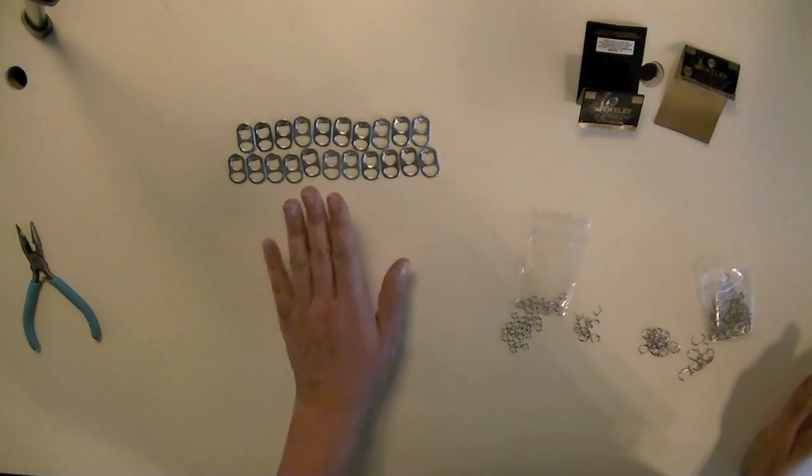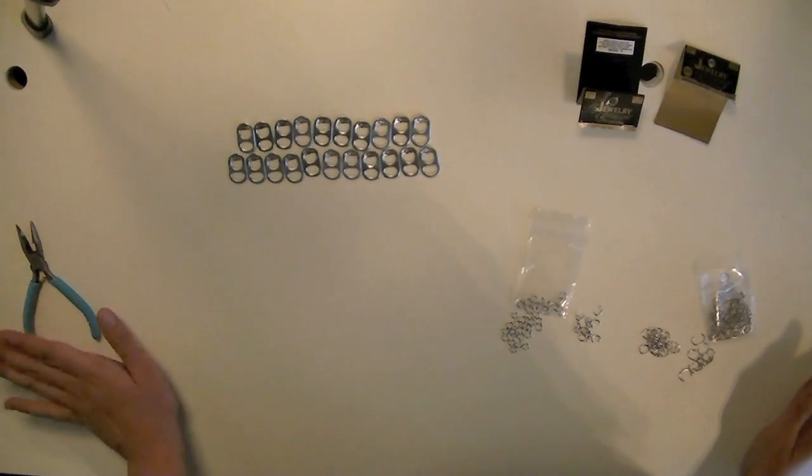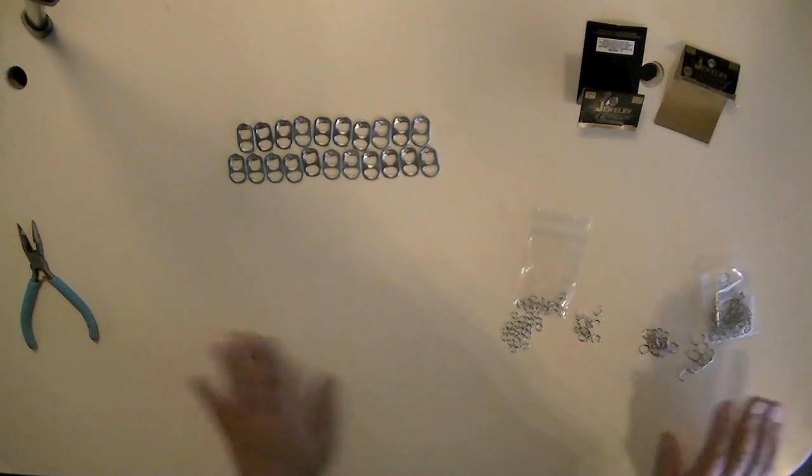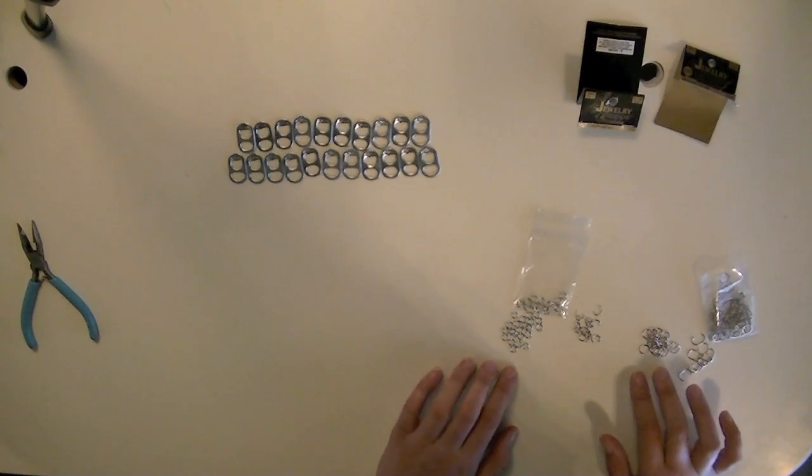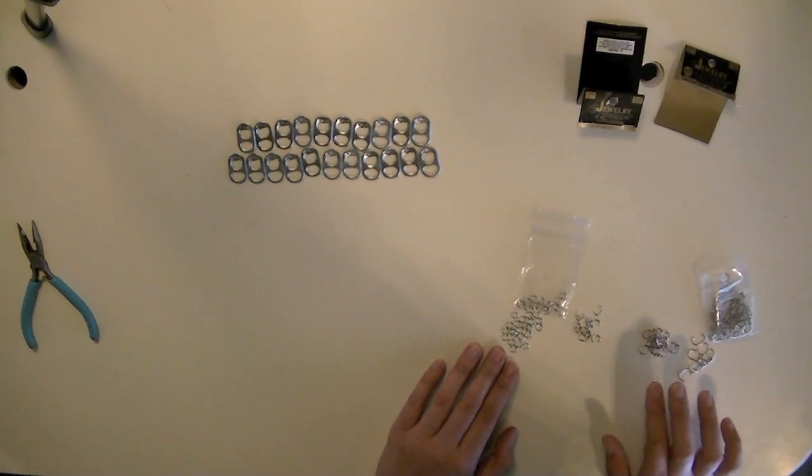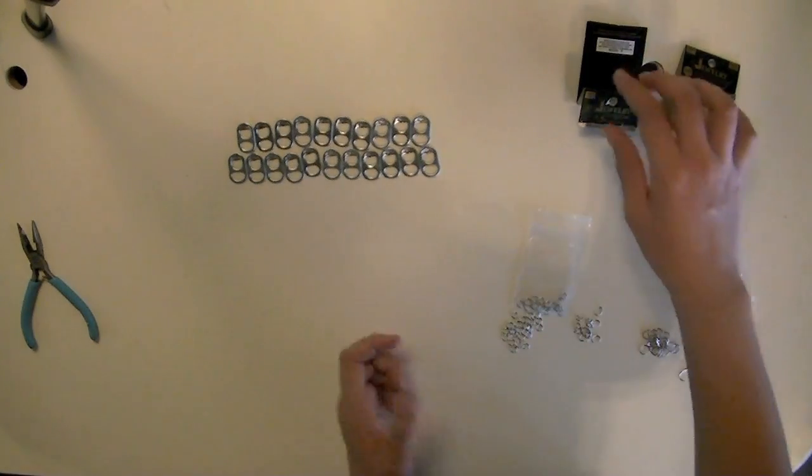To get started, we're going to need some pop tabs, our pliers, and then two different sizes of jump rings. We have the smaller ones which are six millimeter and larger ones that are nine millimeter.